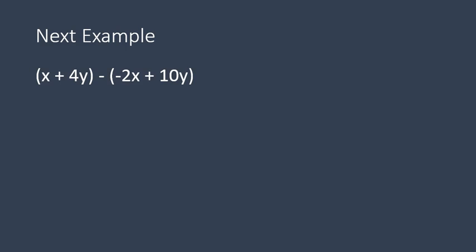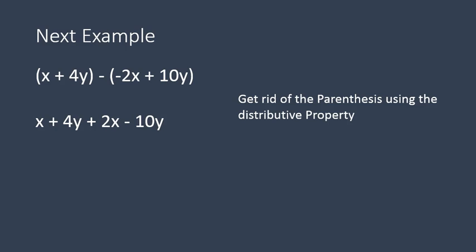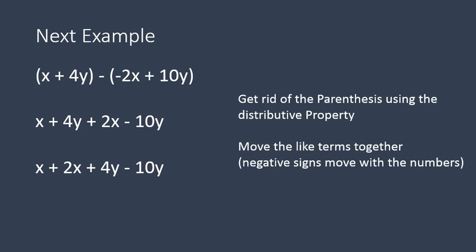Let's look at another example: x plus 4y minus the quantity negative x plus 10y. First, we get rid of those parentheses using the distributive property. That means minus negative x becomes positive 2x, and minus 10y becomes negative 10y. We move together the like terms — the x's together, the y's together. I like to keep them alphabetical. x plus 2x gives me 3x; 4y minus 10y leaves me with negative 6y.